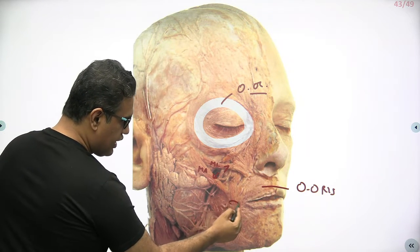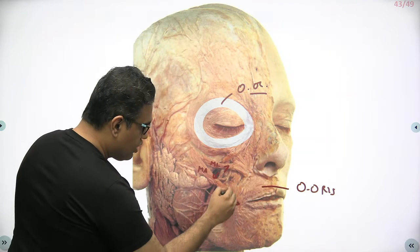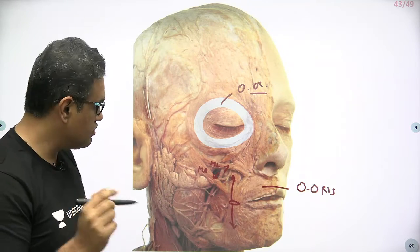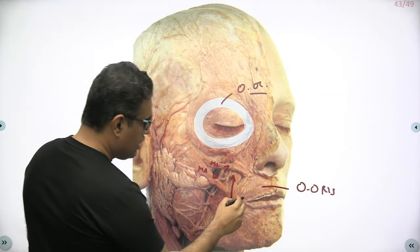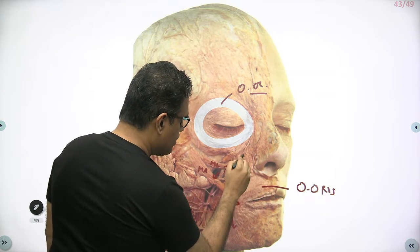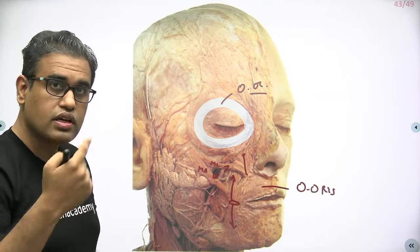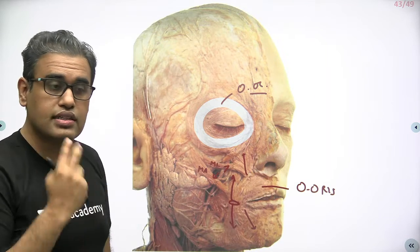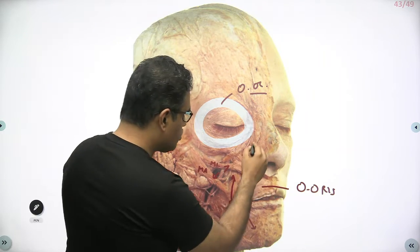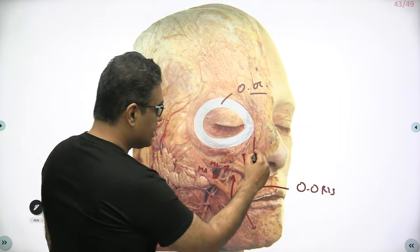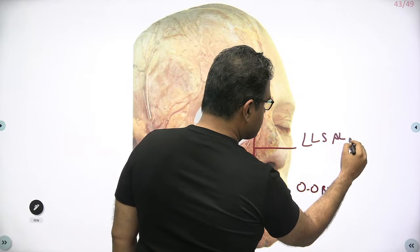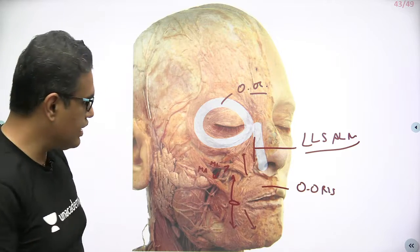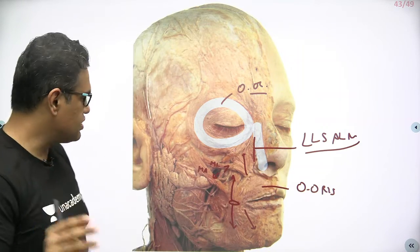Now look at the angle of the mouth. At the angle of the mouth you have levator anguli oris and depressor anguli oris. From here, this muscle going above will be levator labii superioris — it is elevating the upper lip. This will be the depressor labii inferioris — it is depressing the lower lip. The one close over here will be levator labii superioris alaeque nasi, meaning it also runs towards the ala of the nose.